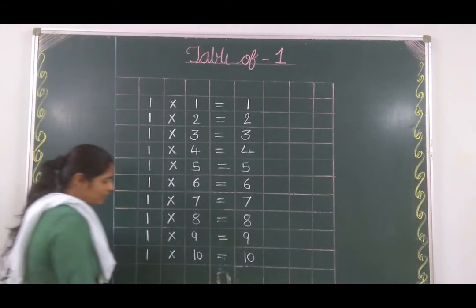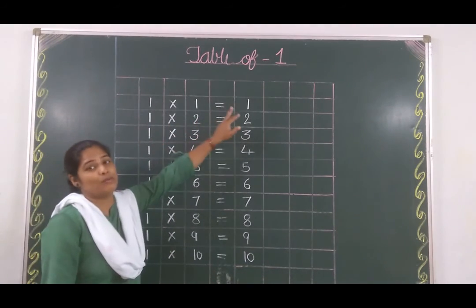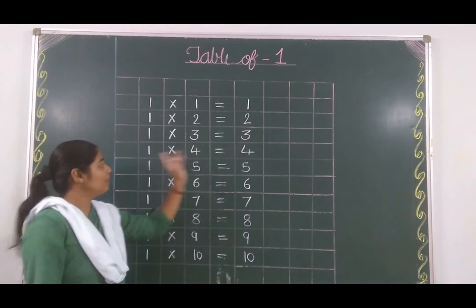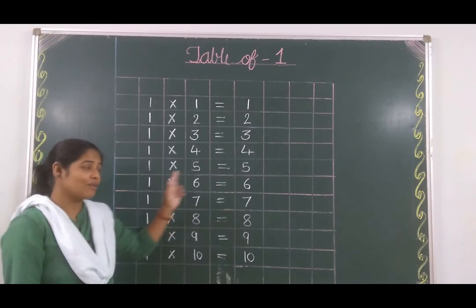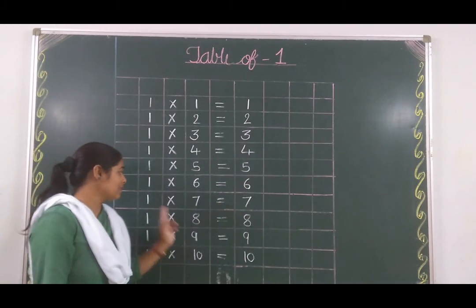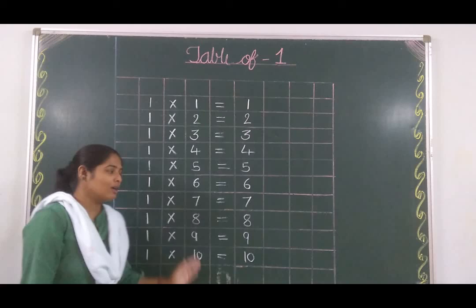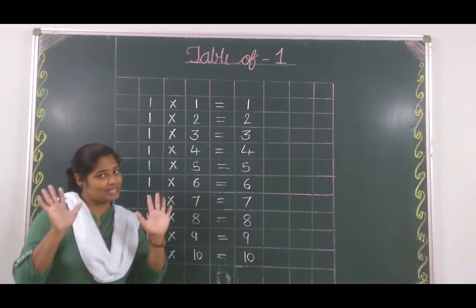One more time. One ones are one. One twos are two. One threes are three. One fours are four. One fives are five. One sixes are six. One sevens are seven. One eights are eight. One nines are nine. And one tens are ten.